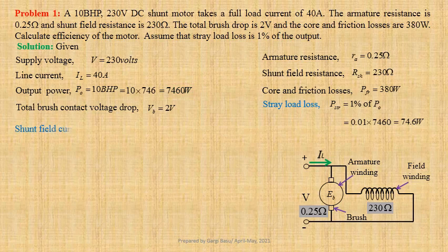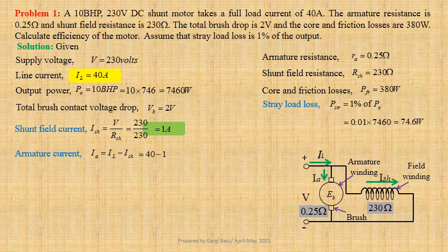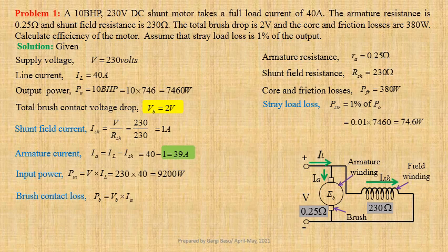Shunt field current ISH equals V by RSH, that is 230 divided by 230, giving us 1A. Armature current IA equals IL minus ISH, that is 40 minus 1, giving us 39A. Input power PIN equals V times IL, that is 230 times 40, giving us 9200W. Brush contact loss PB equals VB times IA, that is 2 times 39, giving us 78W.